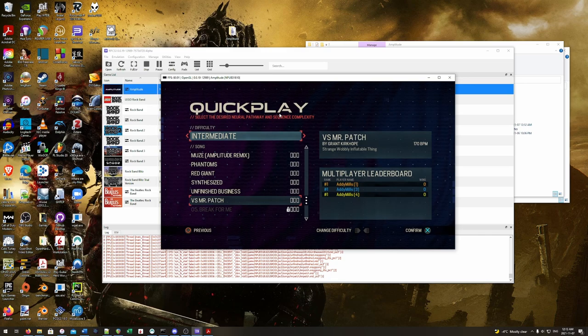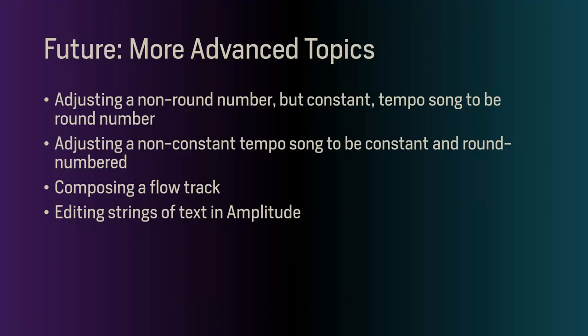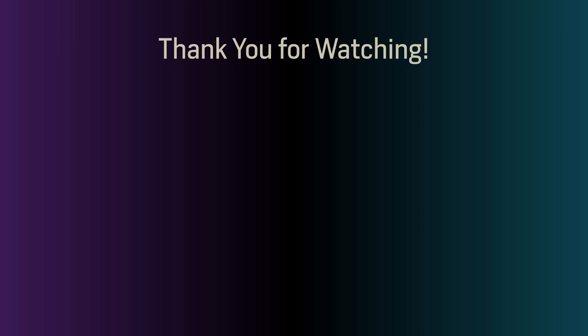As I mentioned, I did create this song before I finished this video, so feel free to check it out on my channel. In the future, I'm going to create another video with more advanced topics — these will include changing a non-round number but constant-tempo song to be round-numbered, adjusting a non-constant tempo song, composing your own flow track, and editing strings of text in Amplitude. Thank you very much for watching part one of my Amplitude Customs tutorial. If you enjoyed the video, please leave a comment, check out my other videos, and also check out Carter's video on adding the PlayStation 2 songs to this version of Amplitude.